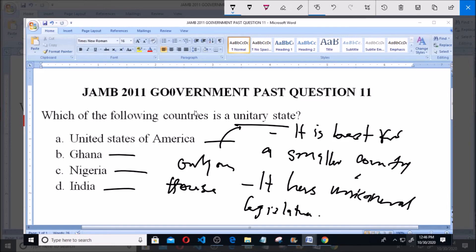And the country that is of small size among the options provided is option B. So which of the following country is a unitary state? Ghana is a unitary state.